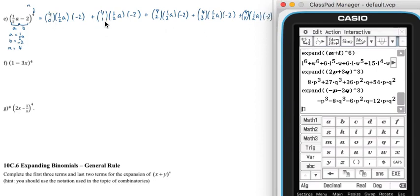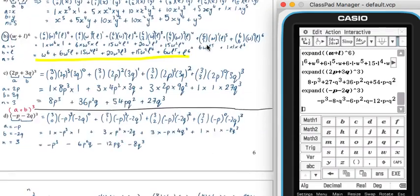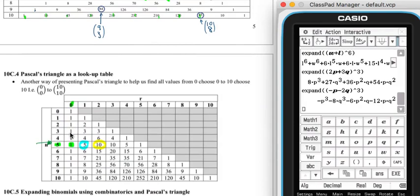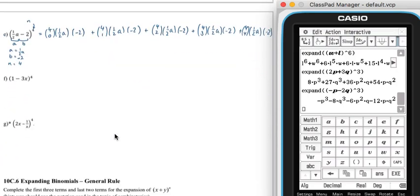So we've got 4 choose 0, 4 choose 1, 4 choose 2, 4 choose 3, 4 choose 4. Let's assess that using Pascal's. So 4 choose 0, 1, 2, 3, and 4. That's 1, 4, 6, 4, 1.